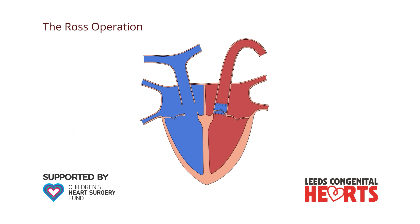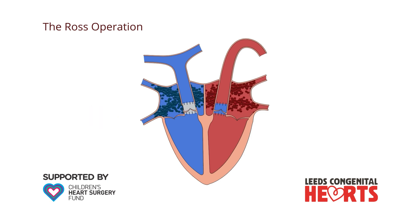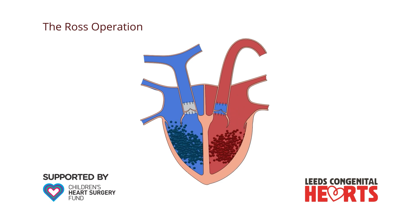A short tube containing a valve called a homograft is then sewn in to become a new pulmonary valve. The homograft originally comes from a human donor, having been preserved until required.